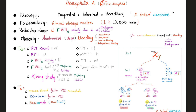Treatment of hemophilia A includes plasma-derived factor 8 concentrate, recombinant factor 8, and emicizumab (Hemlibra). Also, desmopressin can help because it facilitates the expression of von Willebrand factor, which in turn helps factor 8.